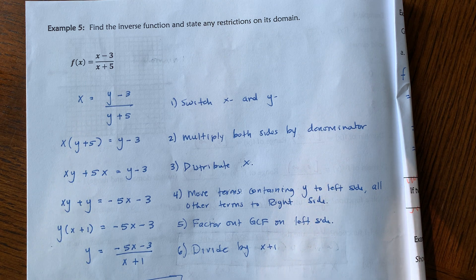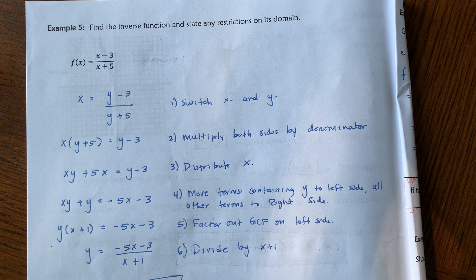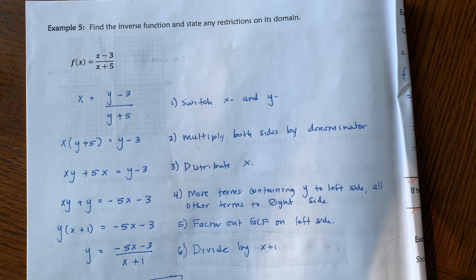So when we switch the x and the y, notice that we have two y's, and we're going to have to find a way to combine that to a single y. A fraction is division, so I would multiply both sides by the denominator y plus 5. After you multiply both sides, distribute the x, so that we have xy plus 5x all equal to y minus 3.